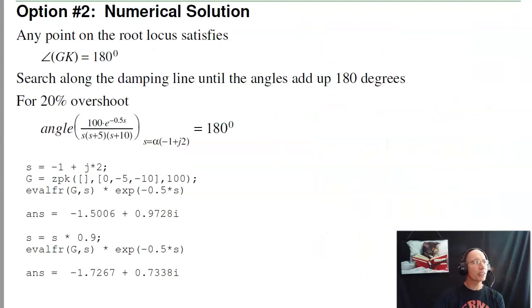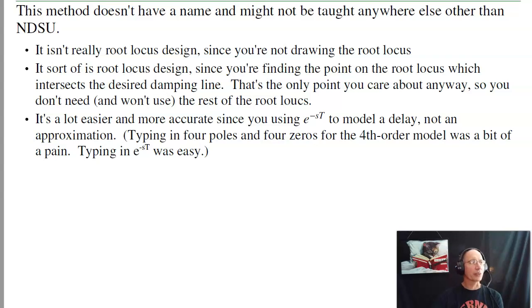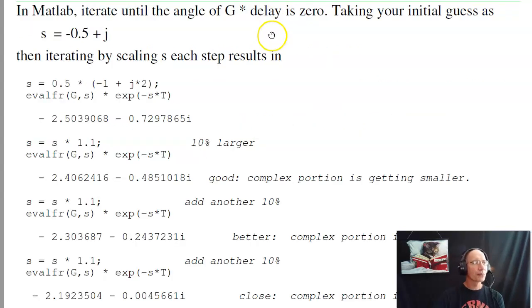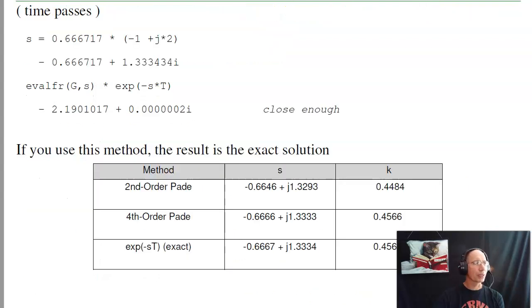That's kind of a different way of doing it. I'm not sure any other university teaches it this way, but that's how I like to do it. To me, it's easier, more accurate, and it gives you the right answer. The net result is we've got three different methods. Second-order Pade gives k equals 0.4484. Fourth-order Pade gives k equals 0.3671, slightly different, more accurate. The numerical method using the exact e to the minus st and iterating gives k equals 0.4566. In this case, it's the same as the fourth-order Pade, but easier.